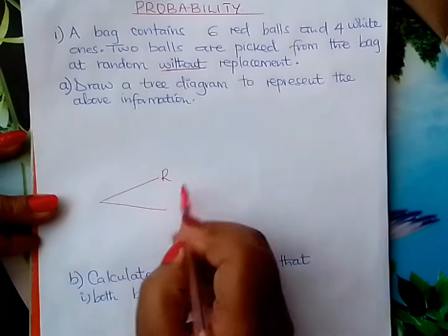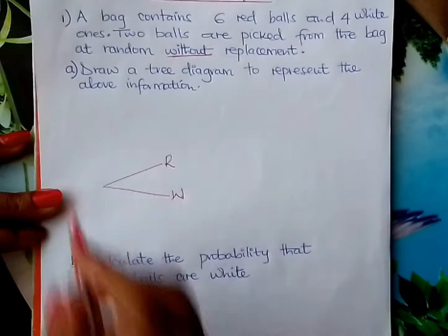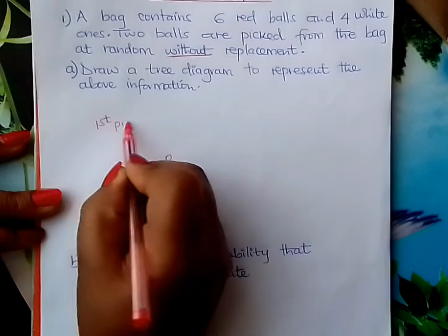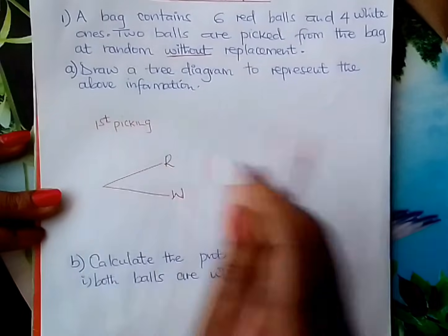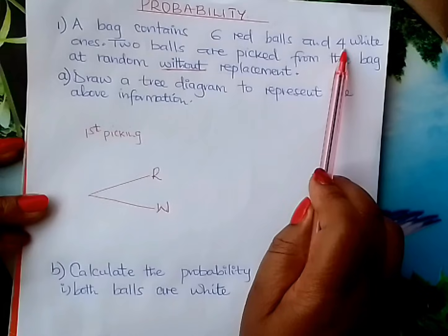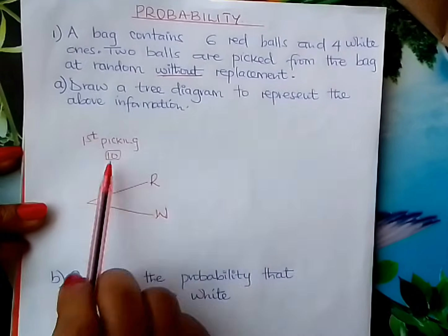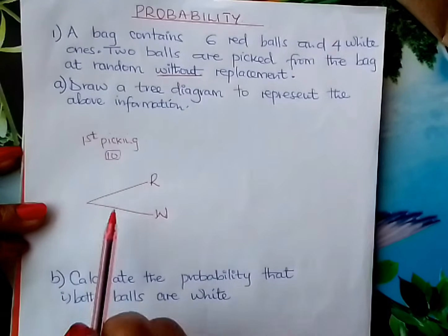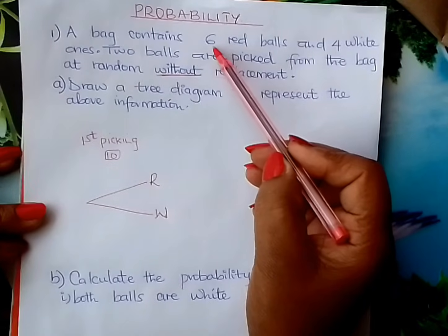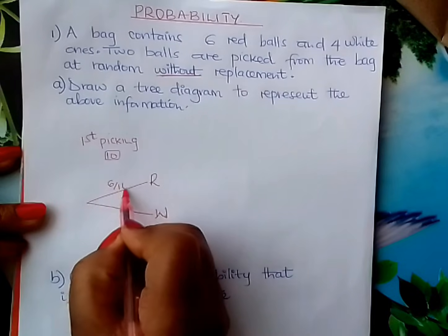Let red be this branch and white be that. We want to deal with the first picking. We are picking out of how many? We had 6 red balls and 4 white balls, so in total they are 10. We are picking out of 10. The probability of picking a red ball is 6 out of 10, since there are 6 red ones.